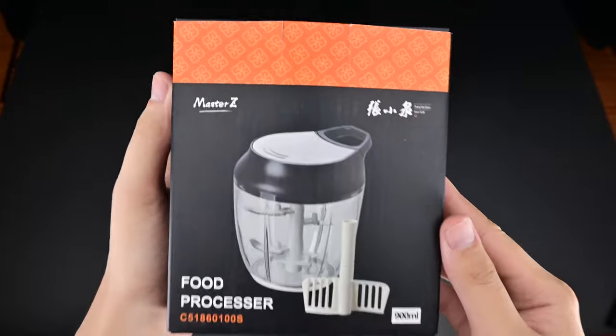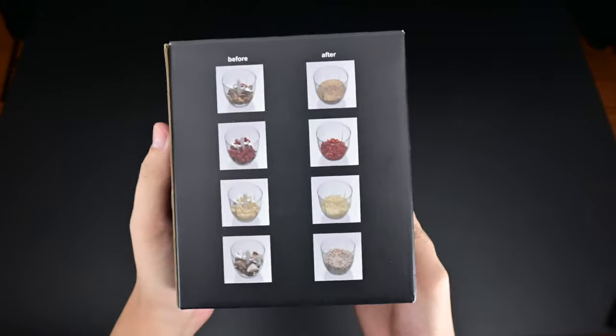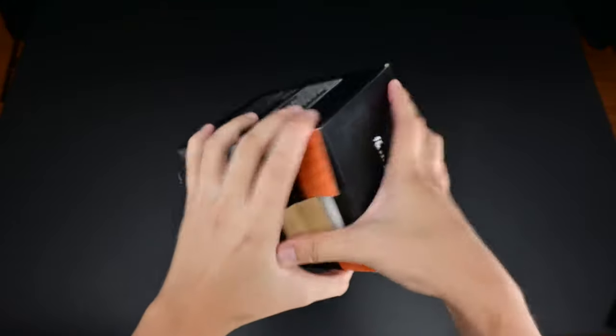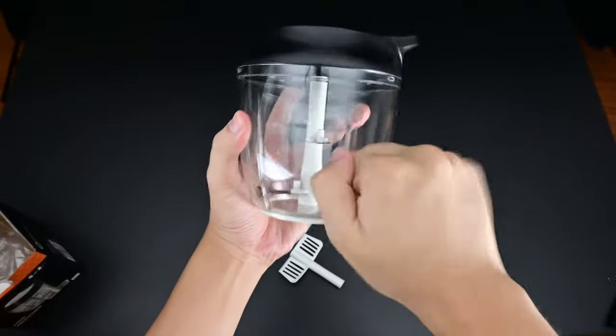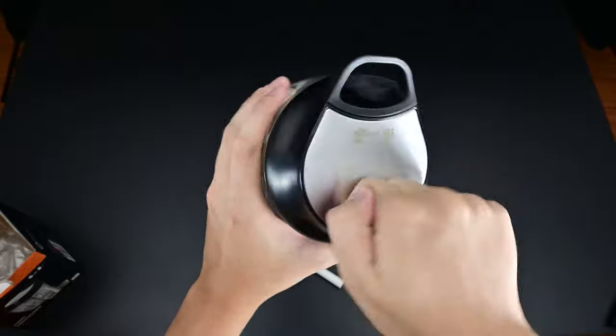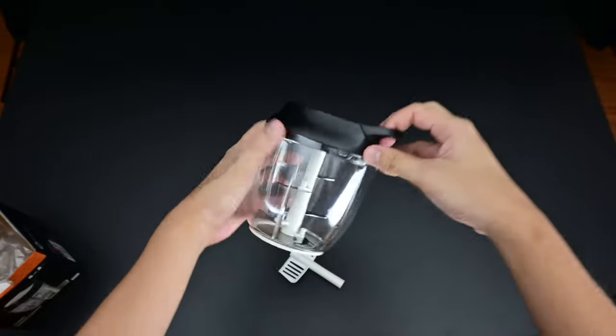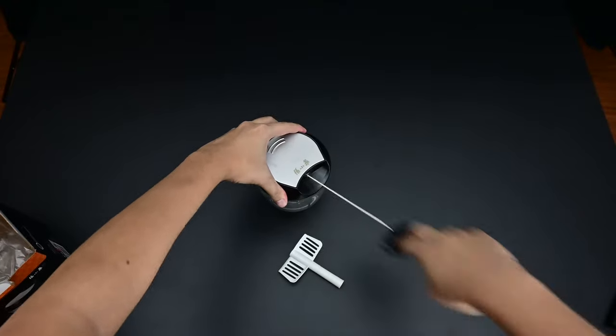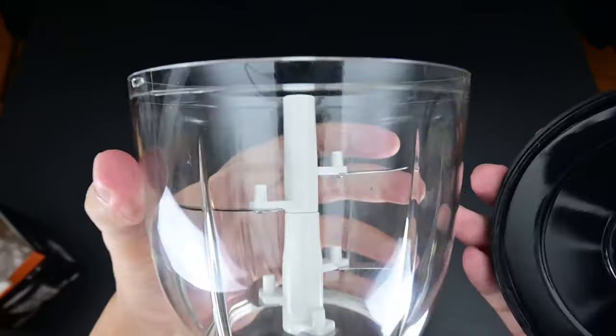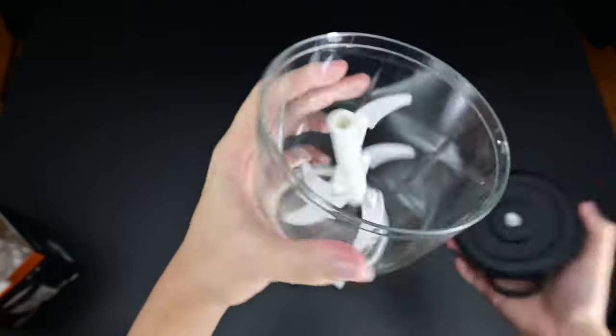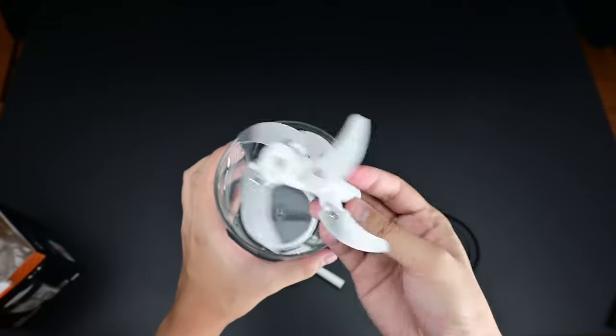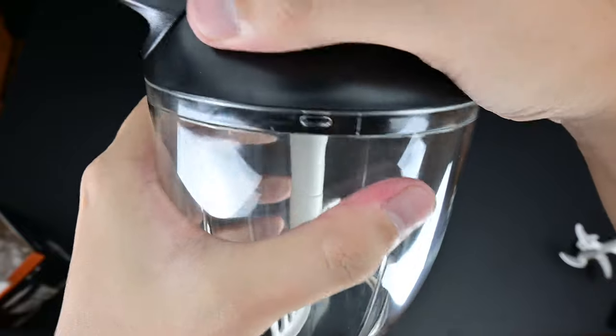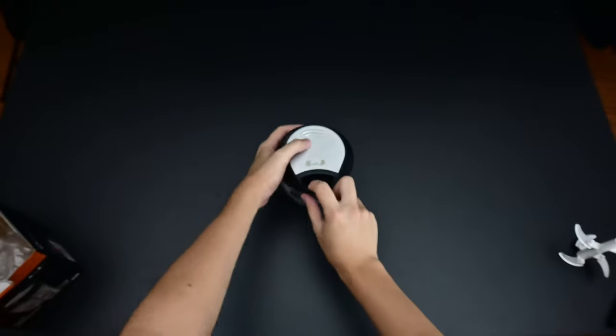First, we have the very popular food processor. This one is a hand-cranked food processor from Master Z. The link for this is down below. It has a paddle, very solid plastic build quality, and it's hand-cranked. So you pull on it and these blades will spin. You have a total of four very sharp blades, so be careful with this. It's also easy to clean and it locks in place.